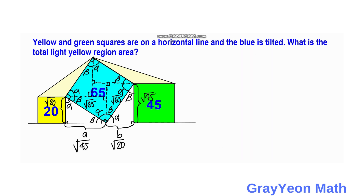Notice that the white triangles below the right triangles formed inside the blue square are actually congruent with the white right triangles outside, because of the angle-side-angle theorem. The hypotenuse between the two angles alpha and beta are all congruent for these right triangles, so therefore these right triangles are congruent.